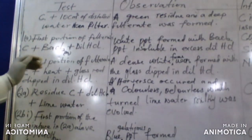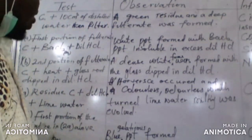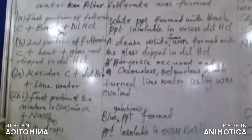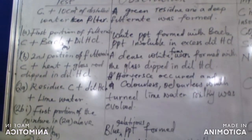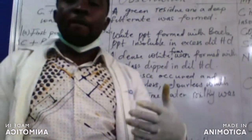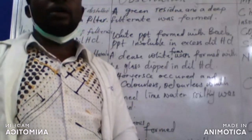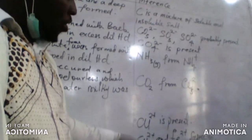We were also asked to divide the solution formed into two portions. To the first portion we add sodium hydroxide in drops, then in excess. When we added sodium hydroxide in drops, we observed a blue gelatinous precipitate. This indicates that copper(II) ion or iron(II) ion are probably present in the solution.